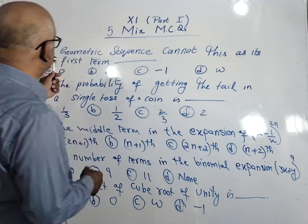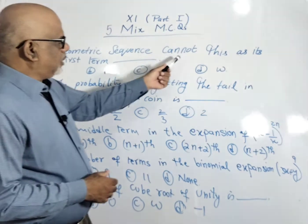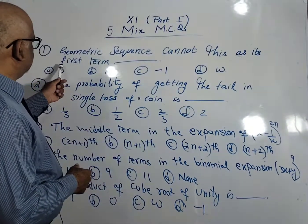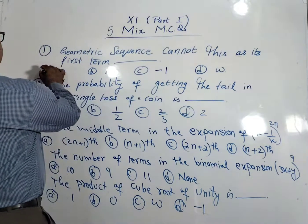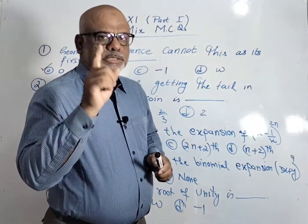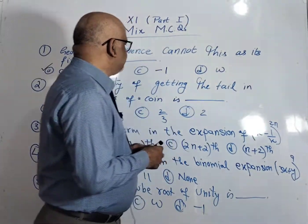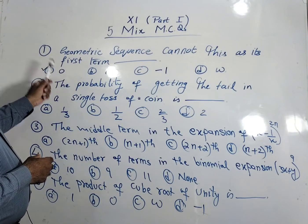So here come to the first MCQ: geometric sequence which cannot have the first term zero. Zero cannot be the first term in geometric progression. So here the correct option is A, that is zero.